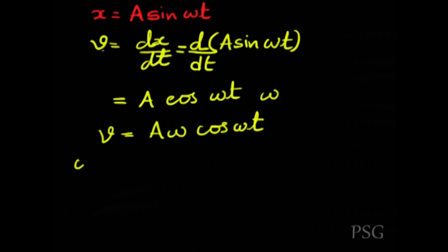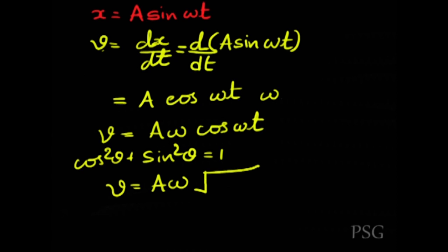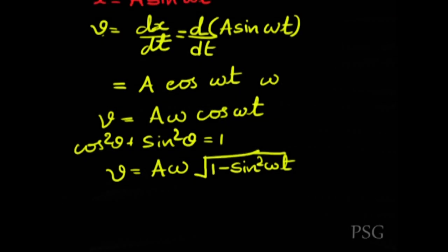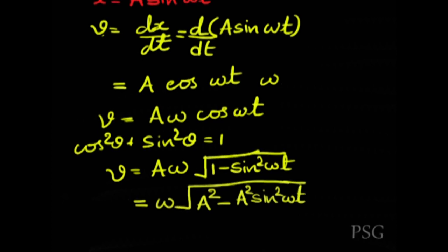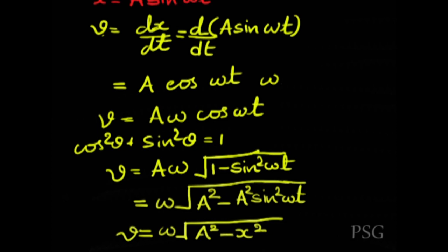From the trigonometric identity cos²θ + sin²θ = 1, I can write v = Aω·√(1 − sin²ωt). Multiplying A into the square root gives v = ω·√(A² − A²sin²ωt). Since A·sin(ωt) = x, this becomes v = ω·√(A² − x²). If you know amplitude and displacement, use this equation; if you know time and amplitude, use the cosine form.